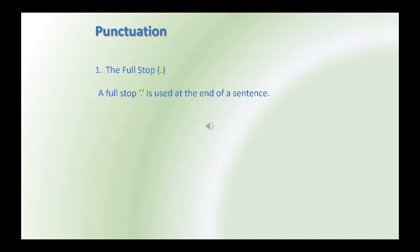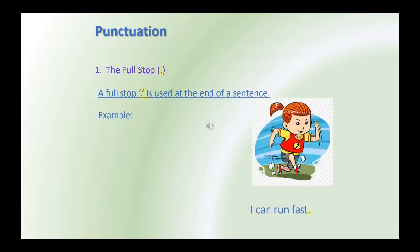Now, let us discuss some of the punctuations. First one: a full stop. A full stop is used at the end of the sentence. Example: I can run fast. The sentence ends with a full stop.